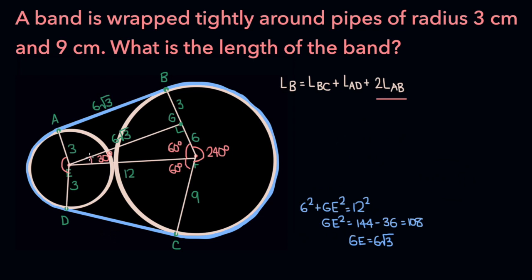Now if we take a look at the smaller pipe, this angle is 30 degrees, and we know that this angle must be 90 degrees, since it's the angle of a rectangle.